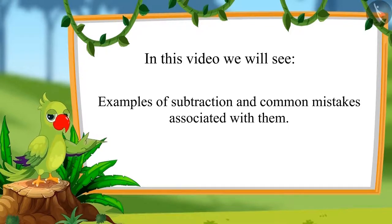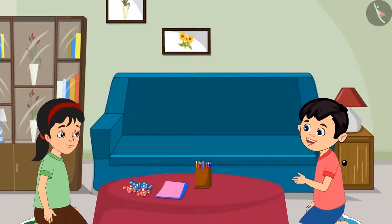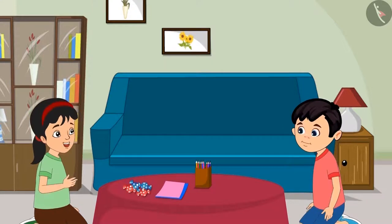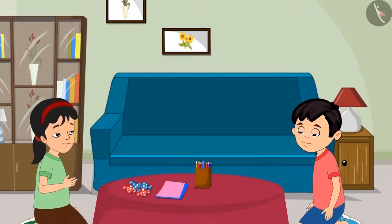Today is Sunday. Tomorrow is Aarti's birthday, who is Chotu and Pinky's friend. Pinky has brought four toffees for Aarti. Chotu asks Pinky to give him one toffee, but Pinky says no — these four toffees are for Aarti, and she can't give even one. She promises to get more toffees for Chotu tomorrow.